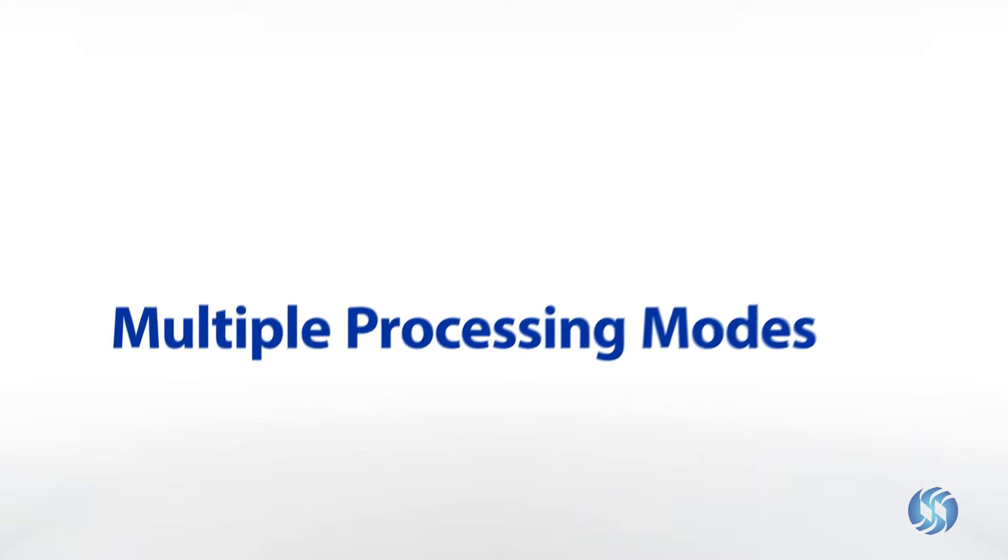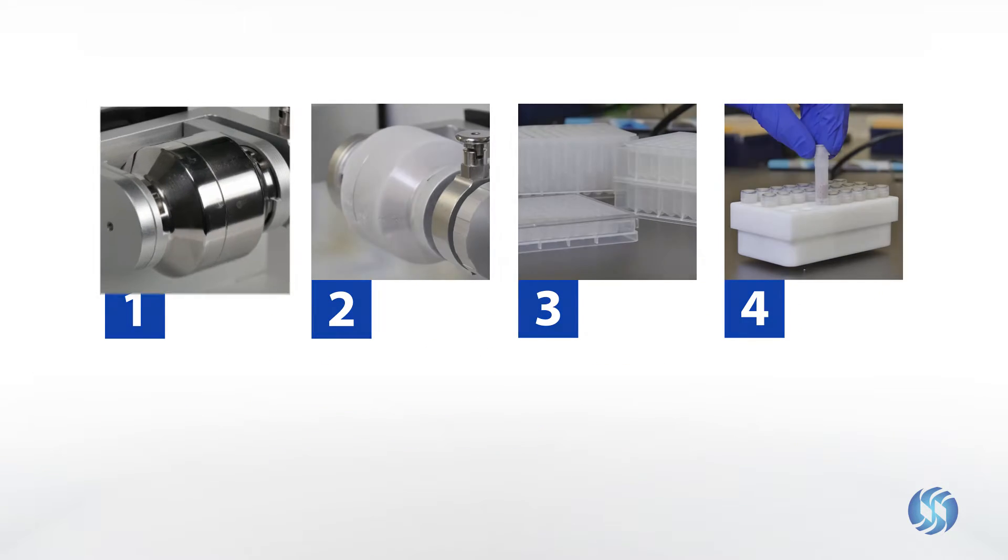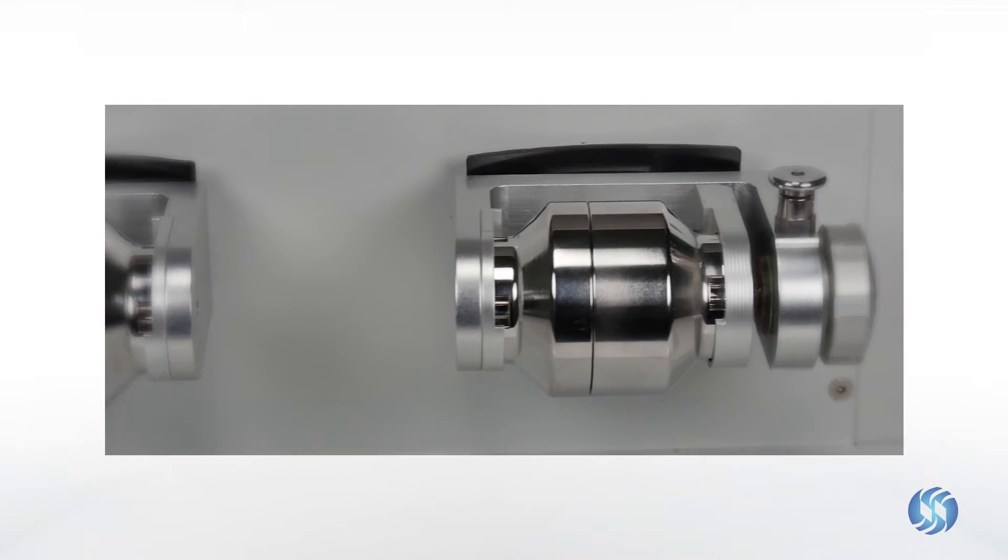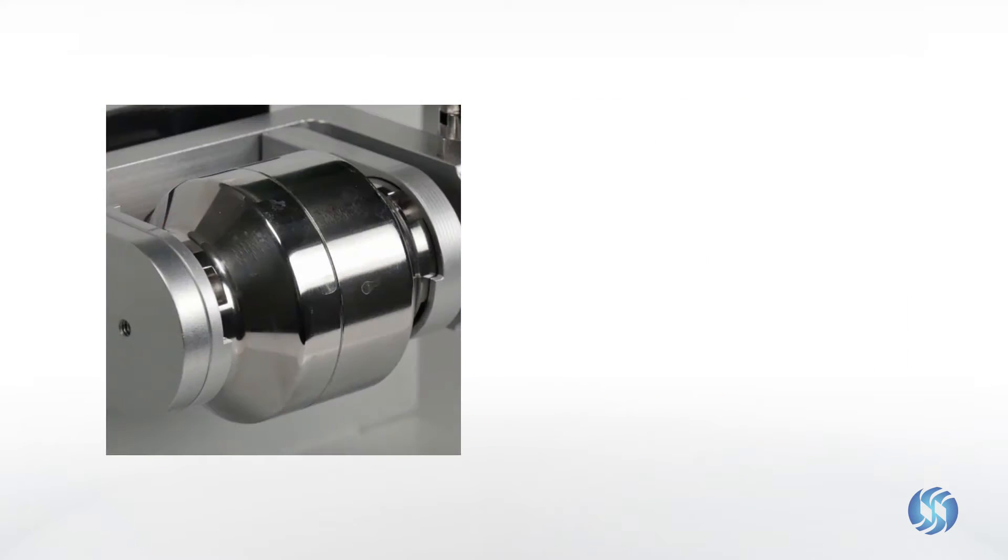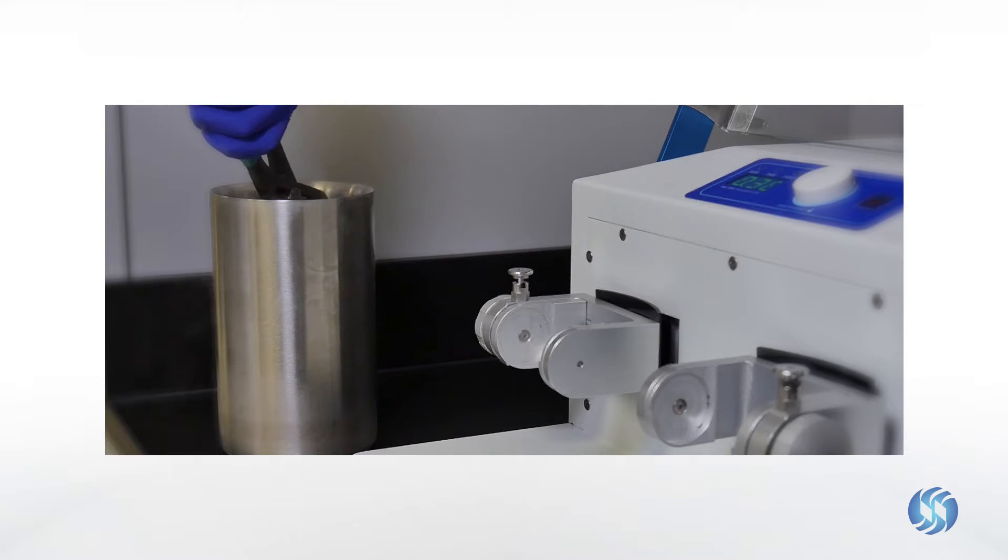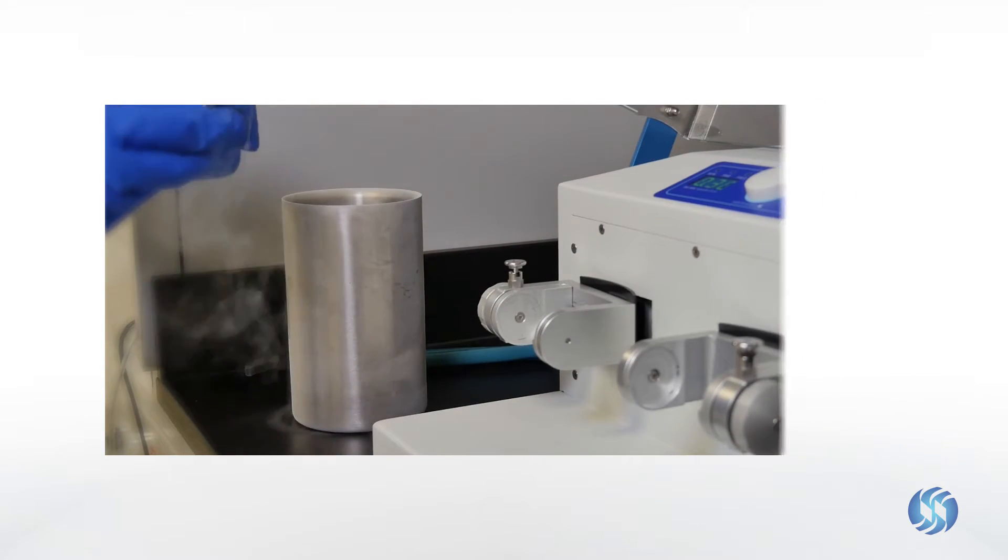The Beadruptor 96 enables multiple processing modes ensuring utility for a broad range of applications and sample types including stainless steel jar processing in volumes up to 50 milliliters for dry or wet milling applications. Tough materials including plastics, bone, and minerals can be ground under cryogenic conditions by cooling the stainless steel jars in liquid nitrogen.